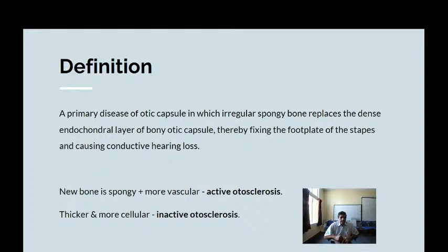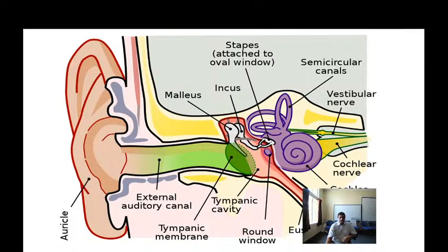The otic capsule is the strong bone which covers the labyrinth and consists of three parts: the vestibule, the semicircular canals, and the cochlea. In this otic capsule there are areas which are likely to develop a spongy bone at a later age. When new bone formation is spongy and vascular, it is called active otosclerosis. When it is thicker and more cellular, it is called inactive otosclerosis.